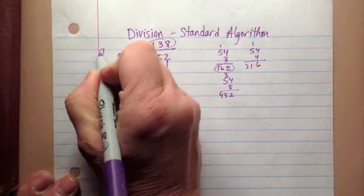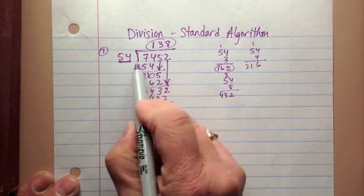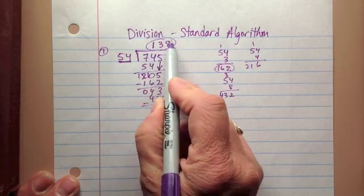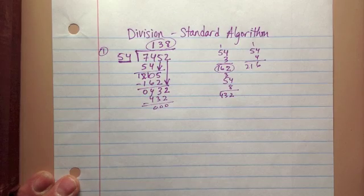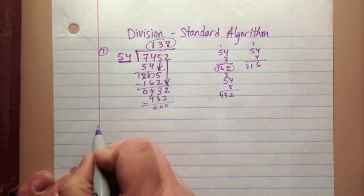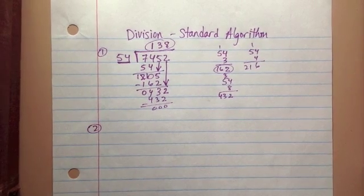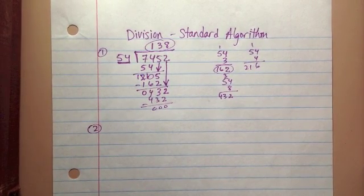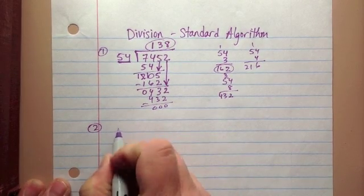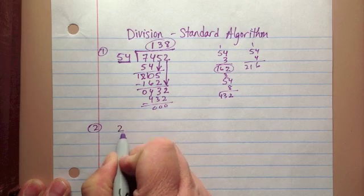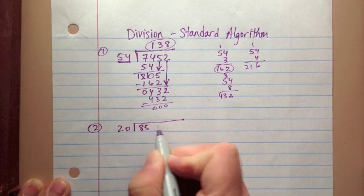That was example one: a whole number divided by another whole number that gets us to a whole number with no remainder, or no parts left over. Now let's get a little more complicated. Using the standard algorithm, let's do two whole numbers that will result in a remainder.